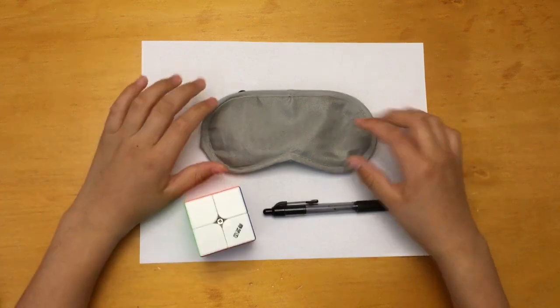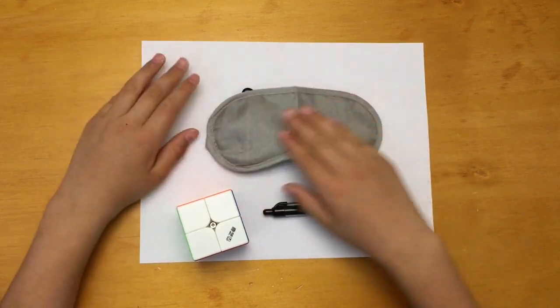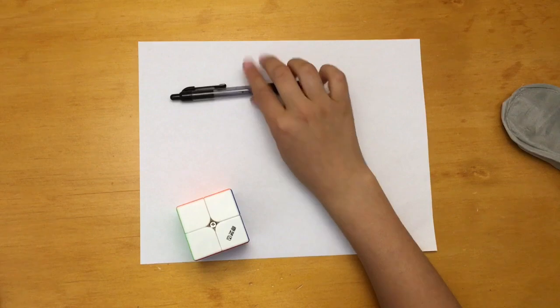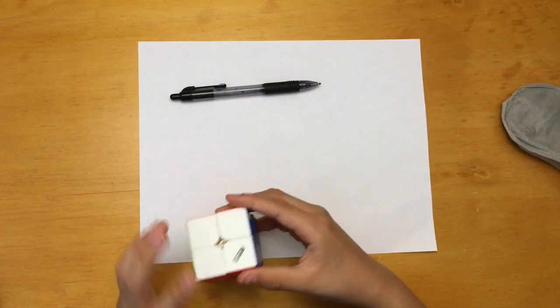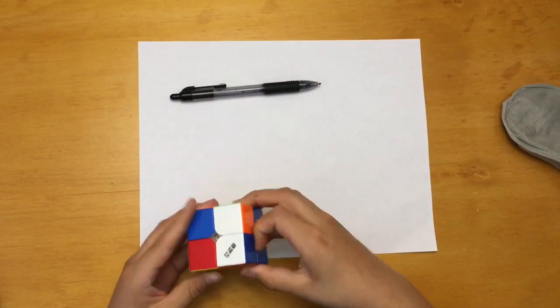So a blindfold will be cool to have for when you get more advanced, but for the beginning pen and paper will help you a lot, and of course your 2x2.